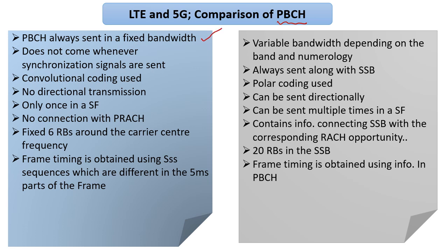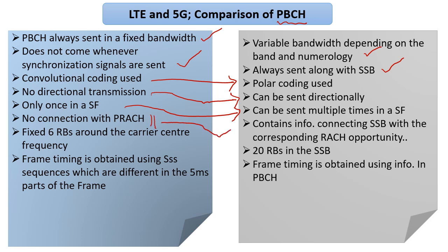In LTE, PBCH always had a fixed bandwidth, whereas here the bandwidth is not fixed. In 5G NR, PBCH is bundled along with the sync signals, which is not the case in LTE. Coding is different — convolutional coding becomes polar coding. There is no concept of directionality in LTE, but since 5G NR starts with directional SSB possibilities, PBCH also has directionality. In 5G NR, there is a strong connection between PBCH and PRACH because PBCH contains certain details that are very important in the RACH process.